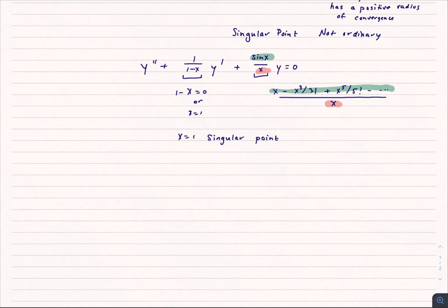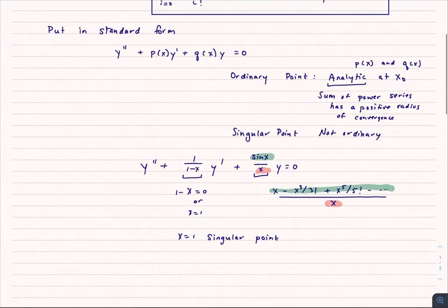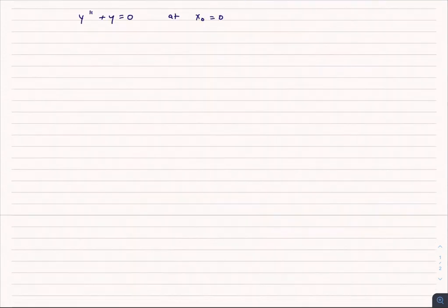So you get some practice finding singular and ordinary points. Once you have determined your singular and ordinary points, you can go ahead and solve some problems. Okay, y double prime plus y equals 0. We know that everything is an ordinary point because there's nothing that involves dividing by 0. So all ordinary points. And we're looking at this at x naught equals 0.